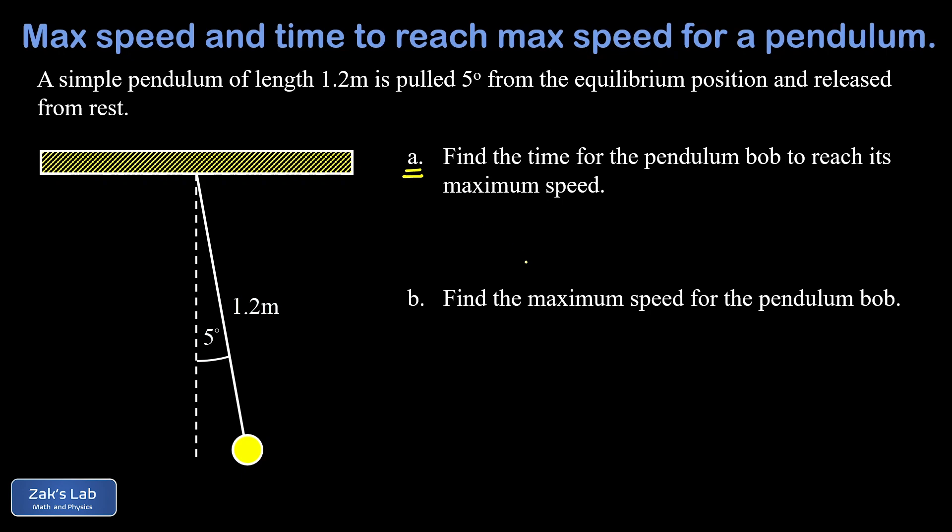The first one is to find the time for the pendulum bob to reach its maximum speed. Now with our knowledge of energy conservation we know that the maximum speed happens at the lowest point for this pendulum, in other words when it's passing through the equilibrium point.